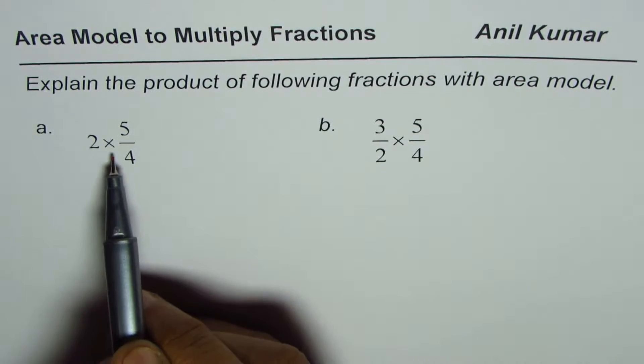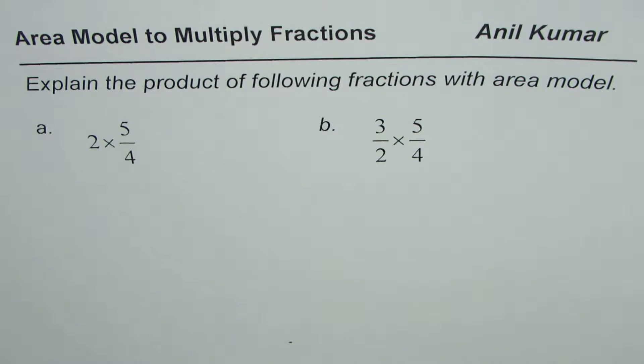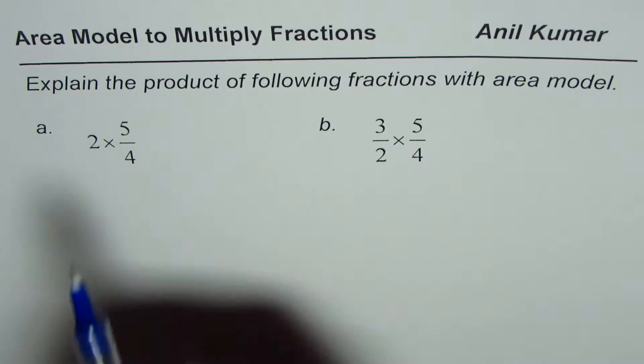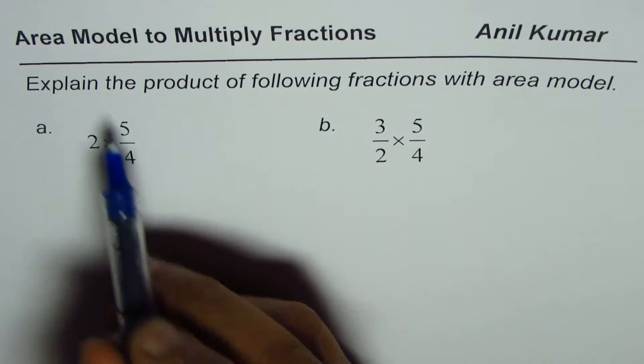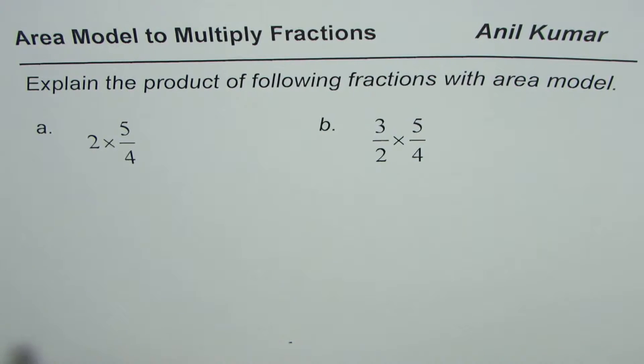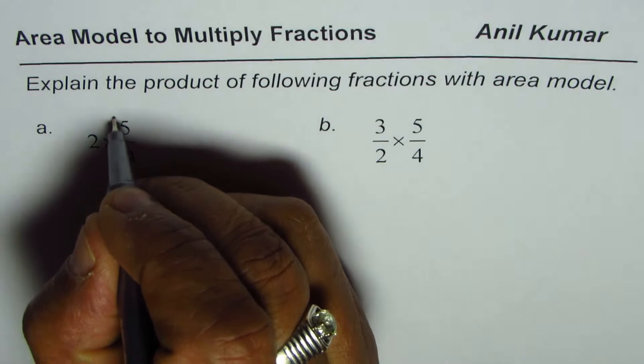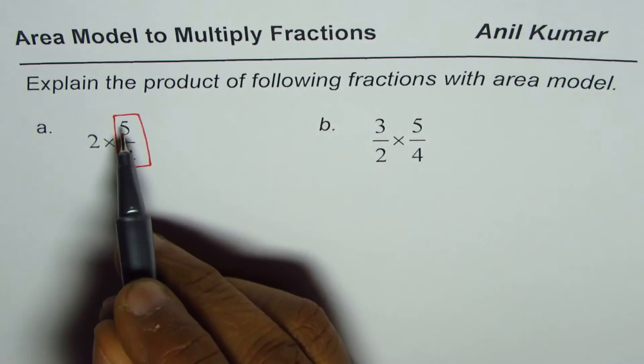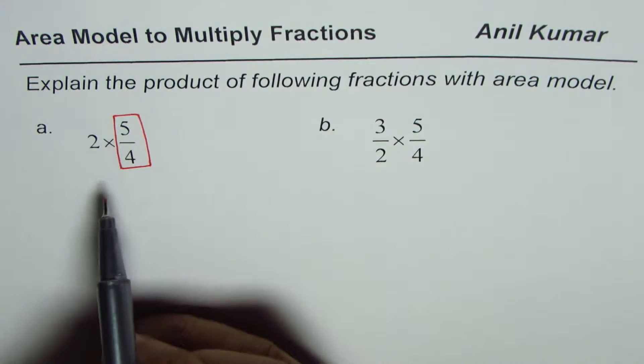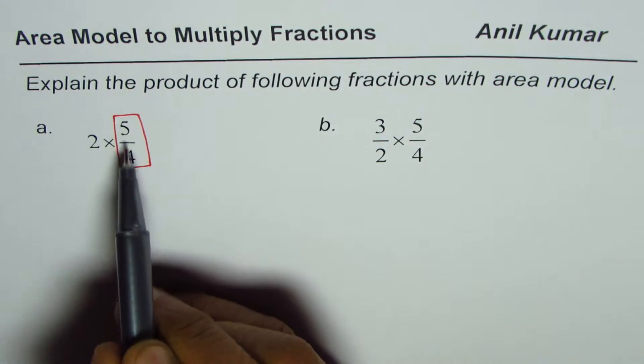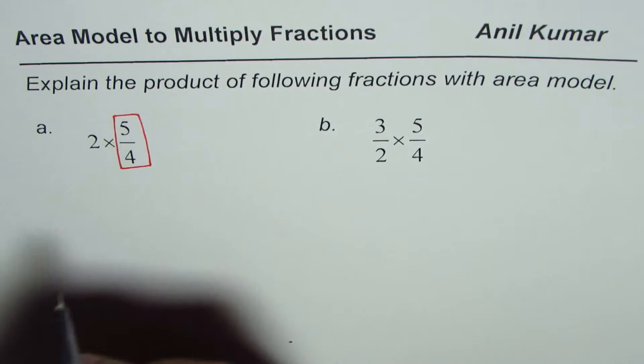So we have two related questions here. The first one is 2 times 5 over 4, and the other one is 3 over 2 times 5 over 4. Let's first do 2 times 5 over 4. We'll treat this as length and width.